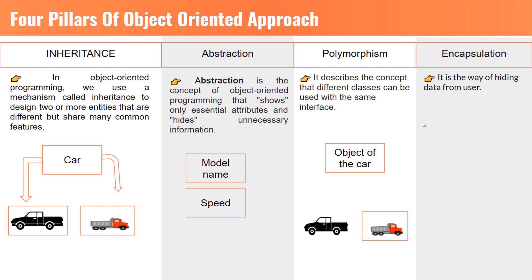The last pillar of object-oriented approach is encapsulation. It is the way of hiding data from user. There might be some data which could be private data that we don't want our users to access. For this, we can use encapsulation. Like, there could be some attributes and methods that we don't want to be used by the user. For this, we can use encapsulation.